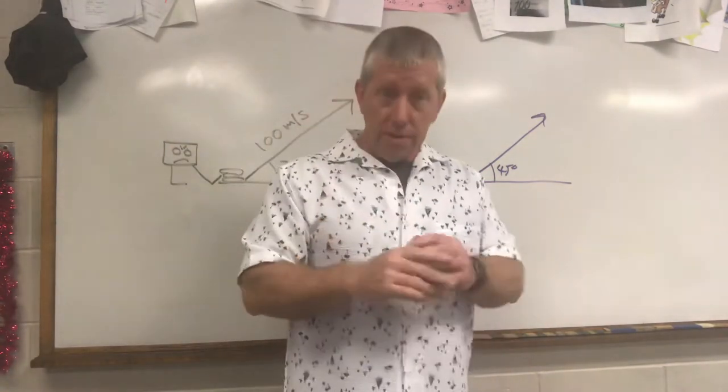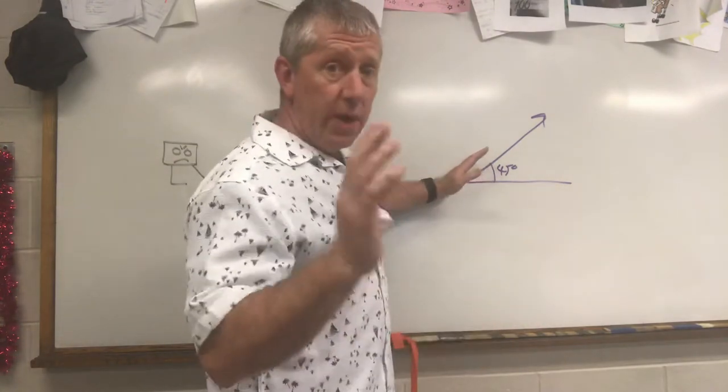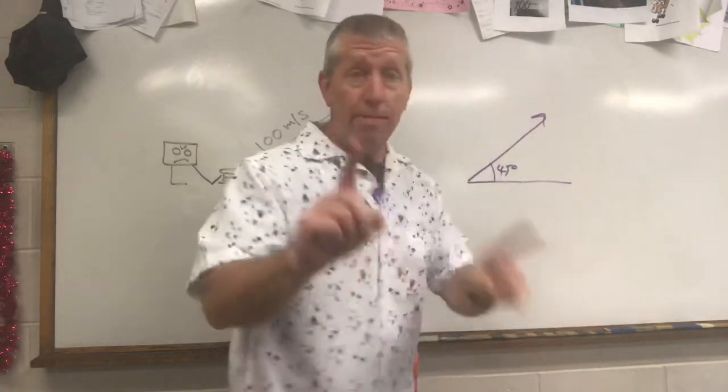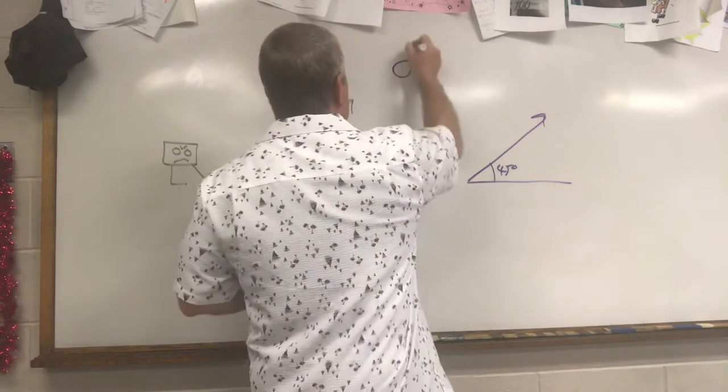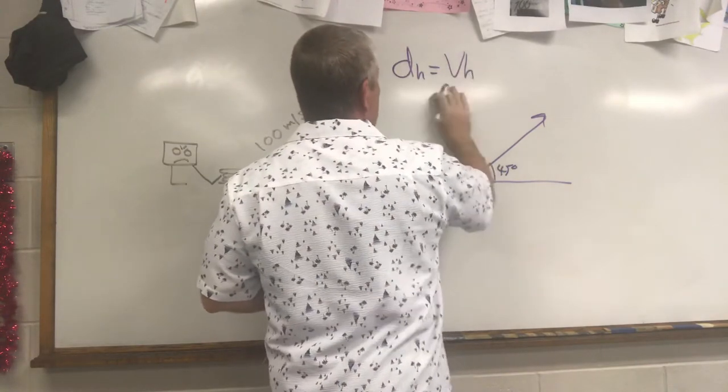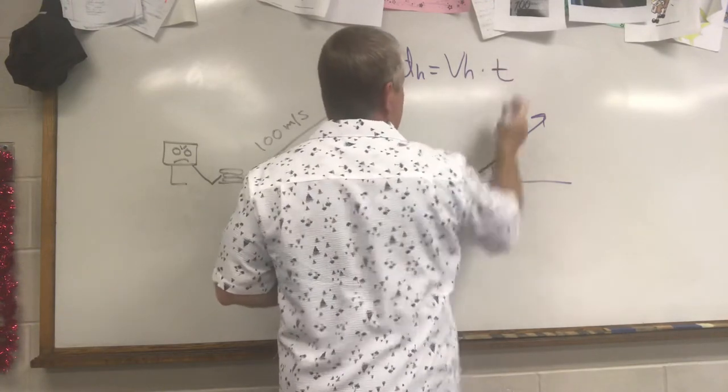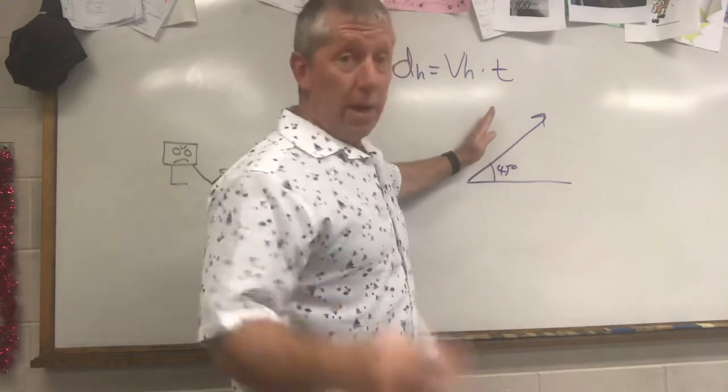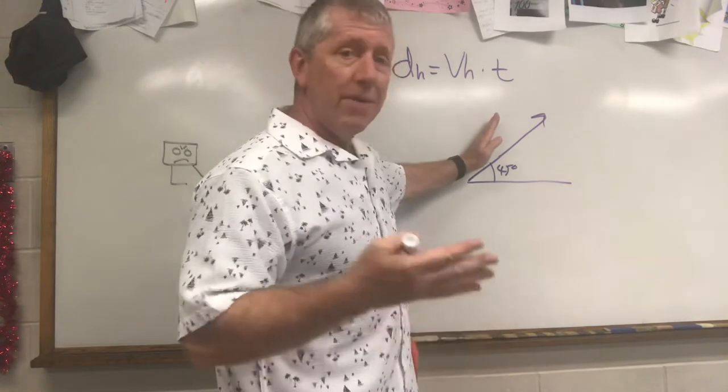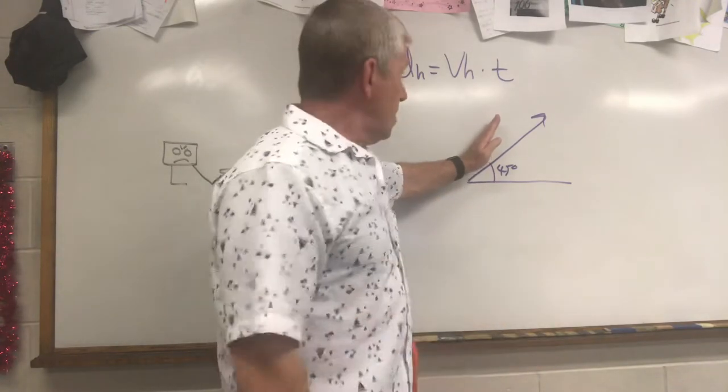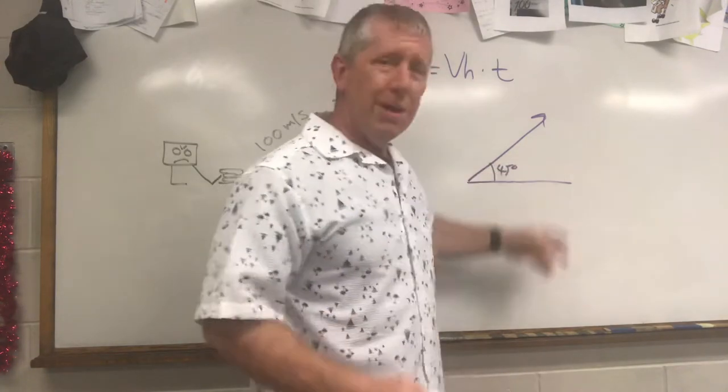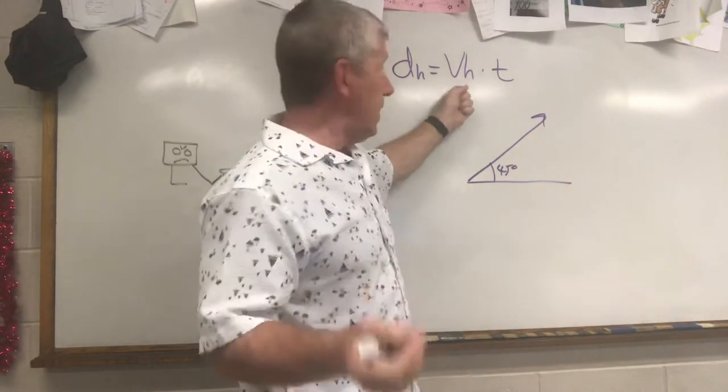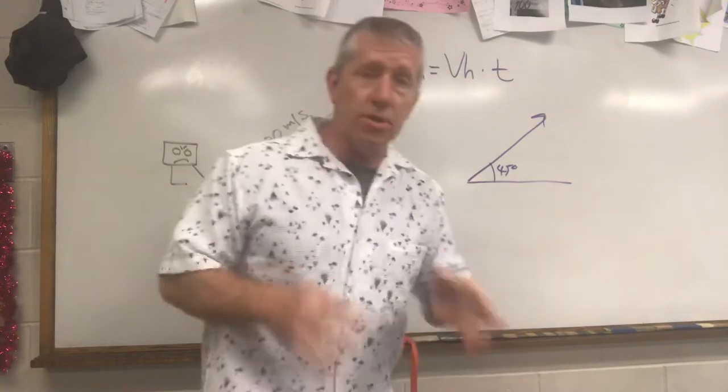But the physics explanation would be because at 45, you have enough forward velocity and enough time in the air. Remember our equation? That horizontal distance of a projectile is equal to horizontal velocity multiplied by time in the air. Anything above 45, you'll get more time in the air, but you won't have enough horizontal velocity. If you go too low, you'll have more horizontal velocity, but you won't get enough time in the air. So 45 degrees is a happy medium between getting enough forward velocity and enough time in the air.